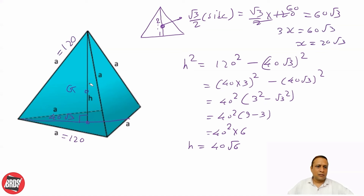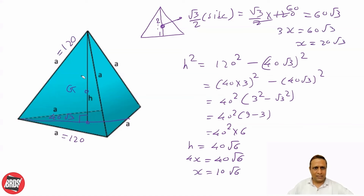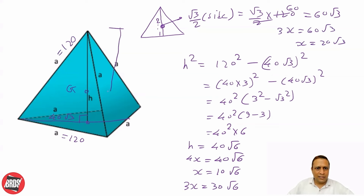As discussed, the centroid divides this height in the ratio 3:1, so the total length is 4x = 40√6, giving x = 10√6. The distance from the apex vertex to the centroid of the tetrahedron is 3x = 30√6.